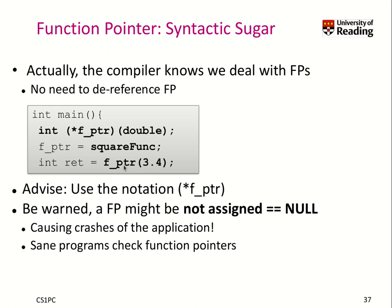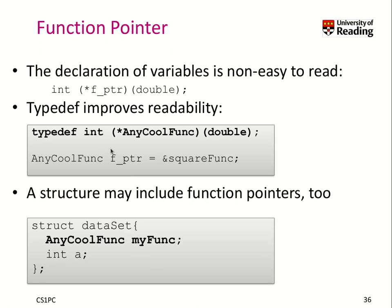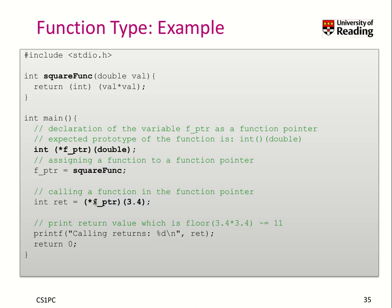The only problem with that is when you have a function pointer that is not assigned and you try to call it, your application crashes. So it's a really good idea to check what you're doing, and that's personally why I prefer the more explicit notation — because with it, I will typically check whether f_ptr is set or not, which is pretty good practice.